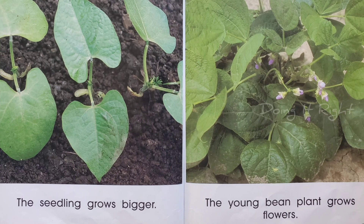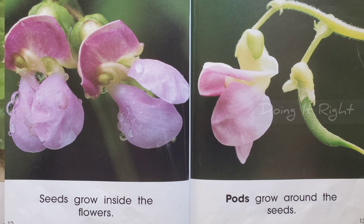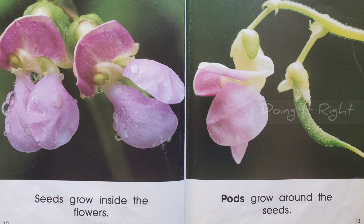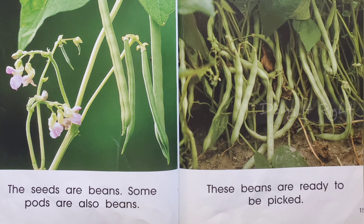The seedling grows bigger. The young plant grows flowers. Seeds grow inside the flowers. Pods grow around the seeds. Seeds are beans. Some pods are also beans.